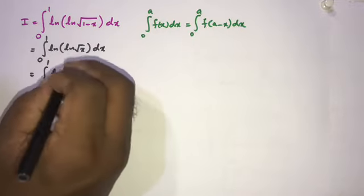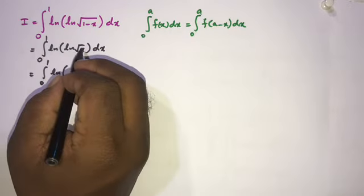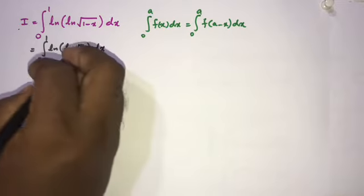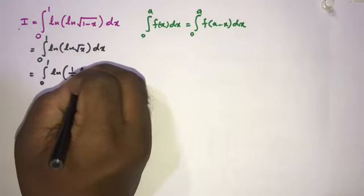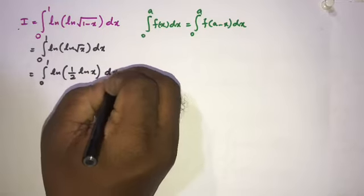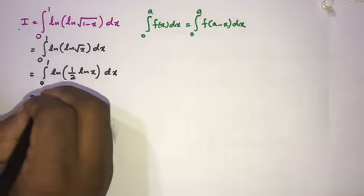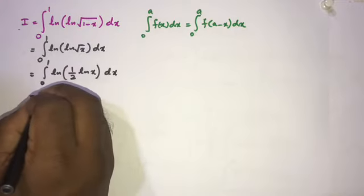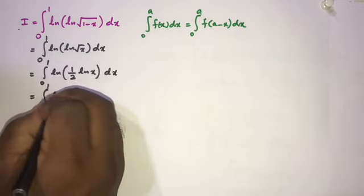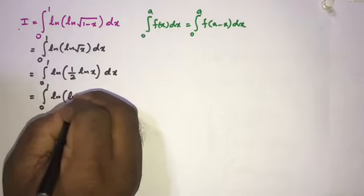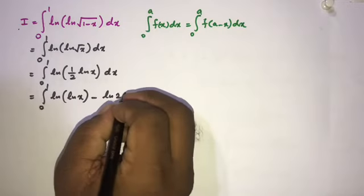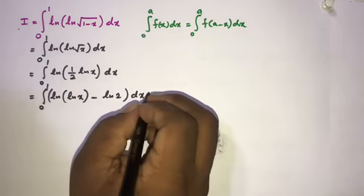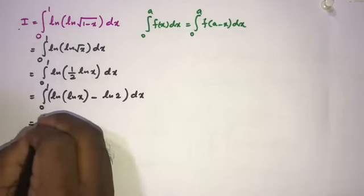We can write √x as x^(1/2), and bring the 1/2 in front of the natural log. So we have the integral from 0 to 1 of ln((1/2)·ln(x)) dx. Using the log property, this becomes the integral from 0 to 1 of ln(ln(x) - ln(2)) dx.